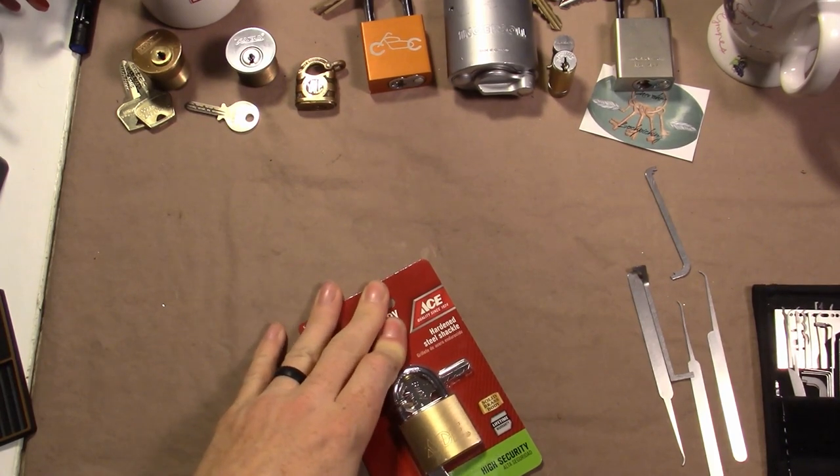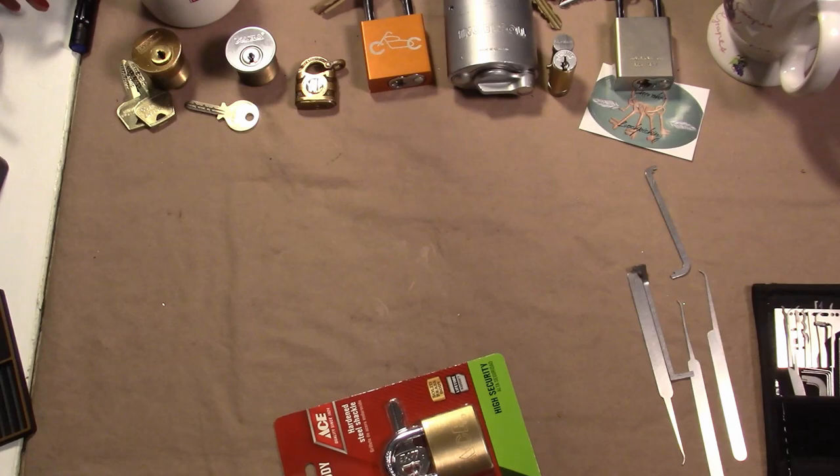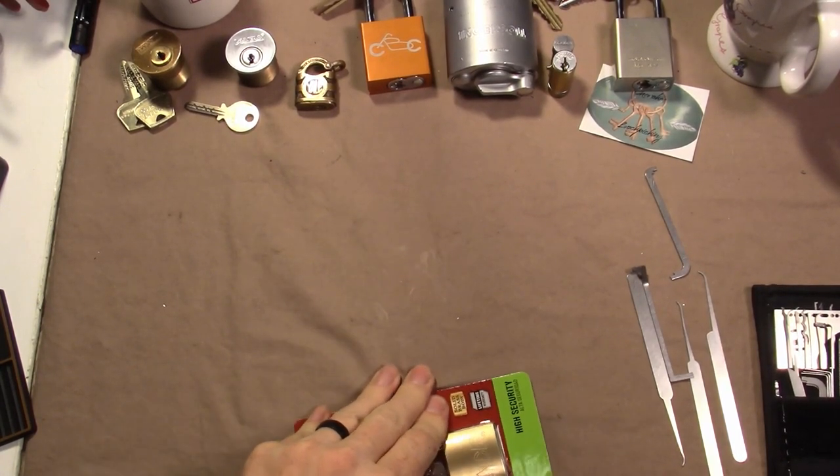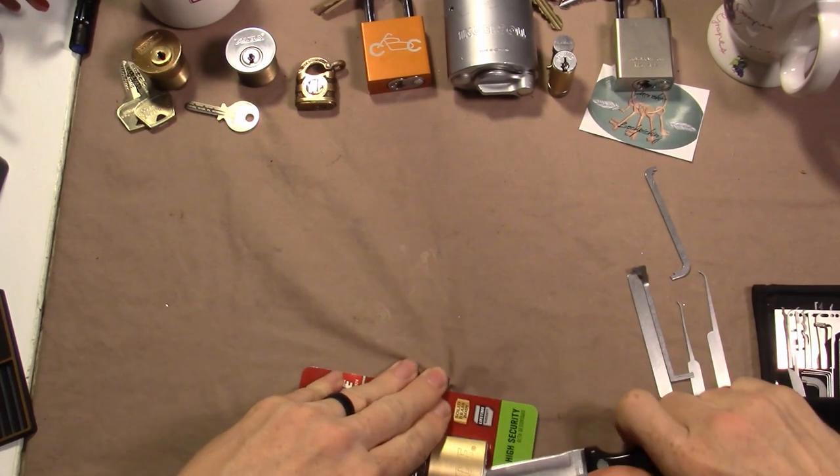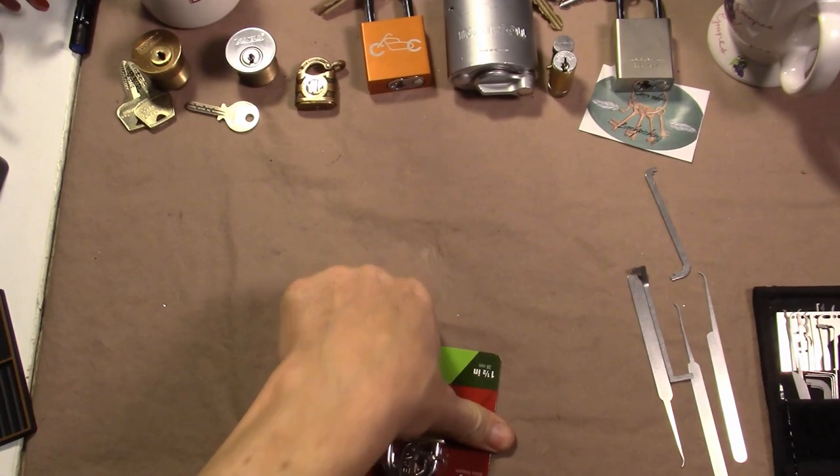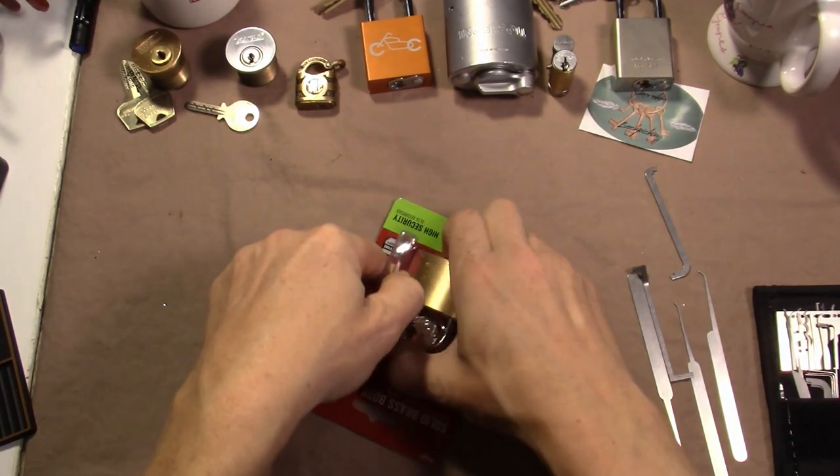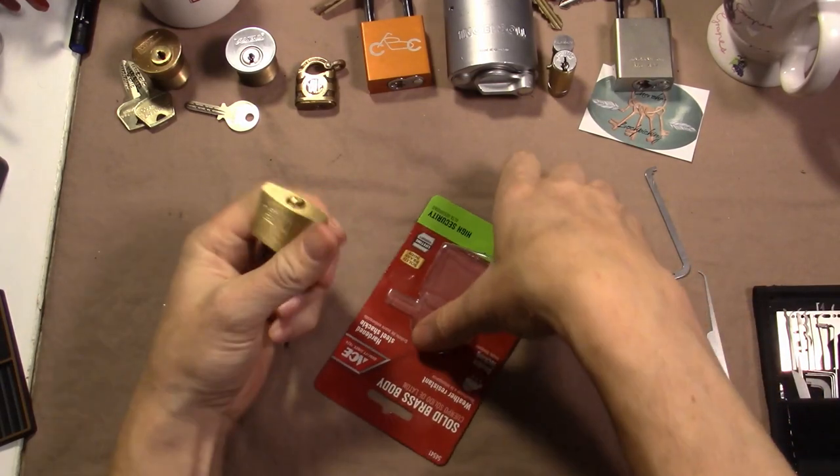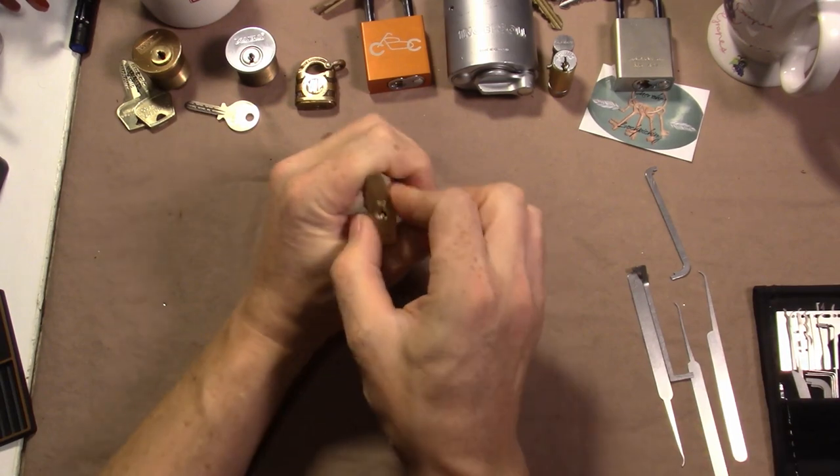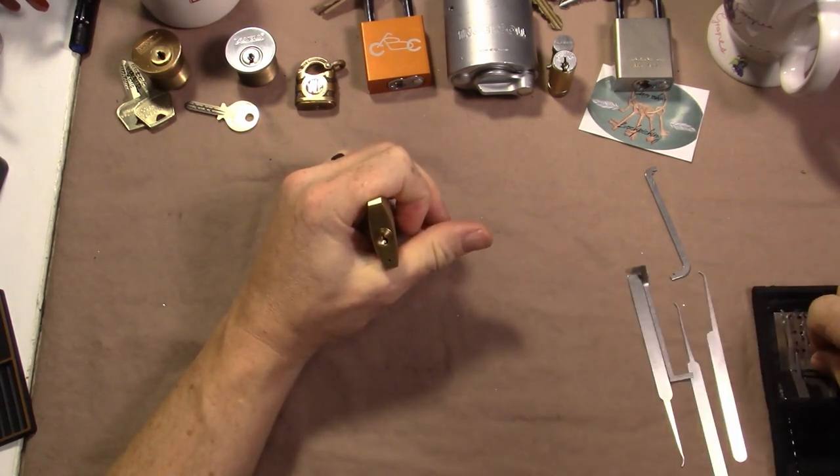If I can even open the package today, which could be a challenge. I'm not doing my best as far as picking today. I tried to do a few warm-up locks and wasn't extremely successful. Okay, the package is out of the way. What do we got for a keyway? That kind of looks like one.